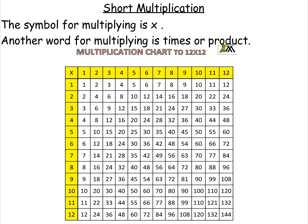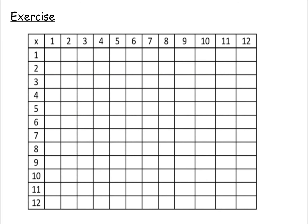Now we're going to be looking at short multiplication. Hopefully we all know that the symbol for multiplying is a cross like that, and it means times. Another word for multiplying is product. What I'd like you to do is practice your times tables — if you draw out a multiplication chart like this and fill it out, just to make sure that you are confident with your times tables.